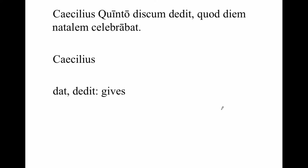Caecilius — nominative singular — is going to be our subject. But before we translate the verb, let's review again. When we have a dictionary entry, throughout unit one, we're going to have the present tense first, followed by the perfect tense, followed by the present tense translation.